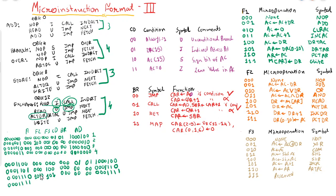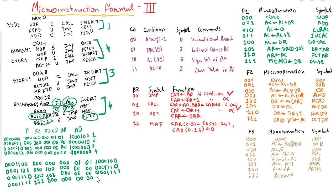At address 15, the last instruction is WRITE. WRITE belongs to field 1 and its value is 111, so F1 will be 111, F2 will be 000, F3 will be 000. Then unconditional jump: 00, jump 00, and fetch — the address for fetch is 64, so 1000000.